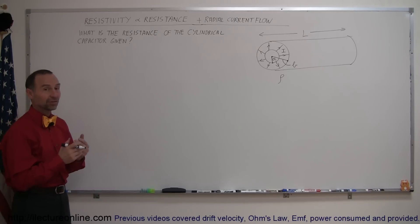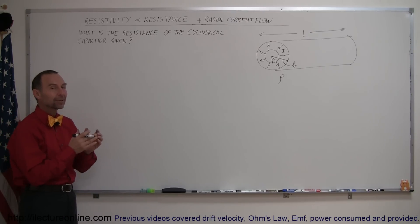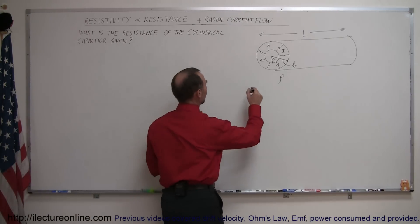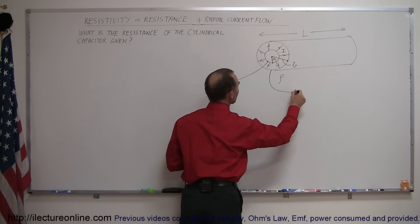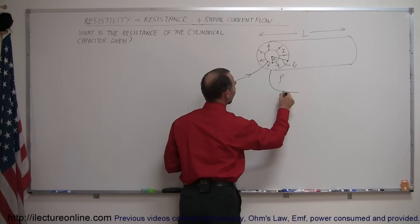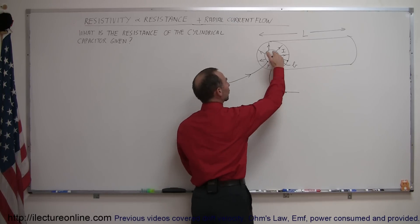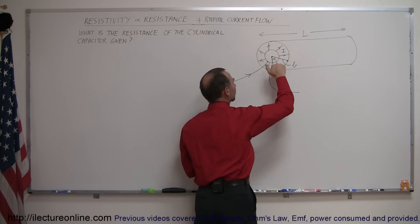We're going to talk about resistivity and resistance, but we're not going to apply it to a non-typical kind of resistor called a radial current resistor, meaning if current were to flow with a wire to the inside of this object and then current would continue from the outside of the resistance.